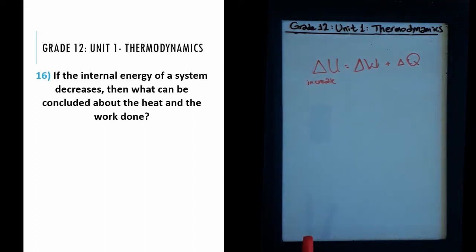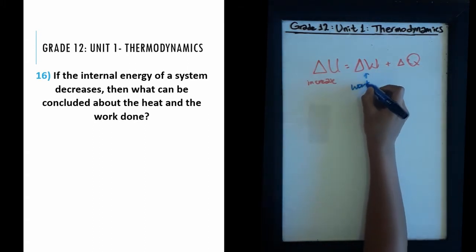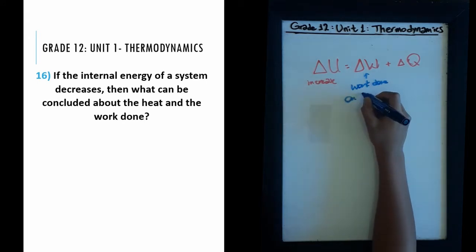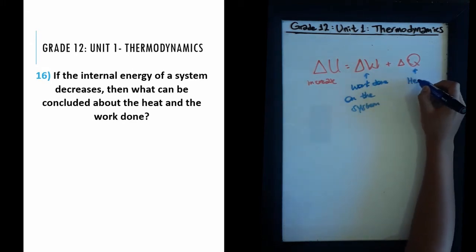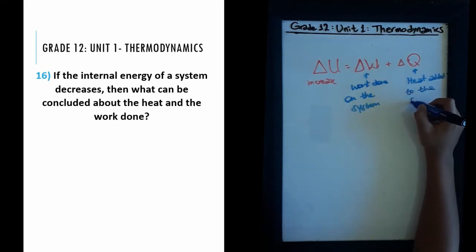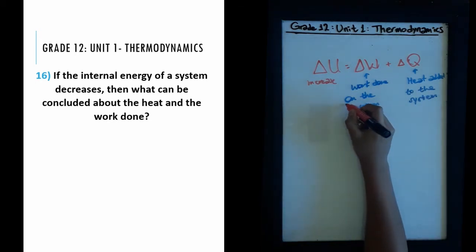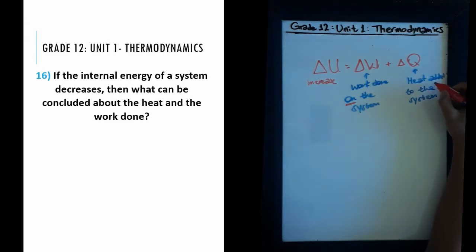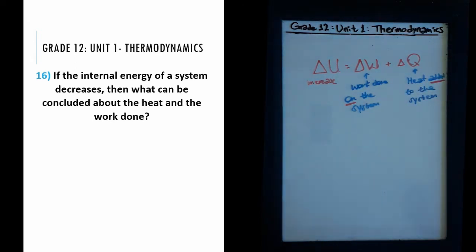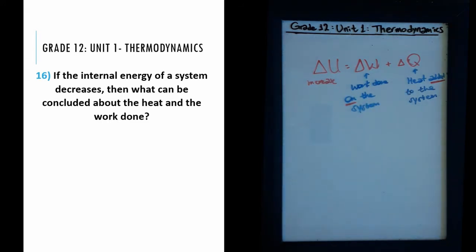ΔW means work done on the system, and ΔQ means heat added to the system. The key word for work is that it's done on the system, and the key word for heat is that it's added to the system. This is literally the definition of internal energy — for there to be an increase in internal energy, work must be done on the system and heat must be added to the system.